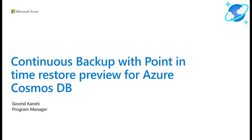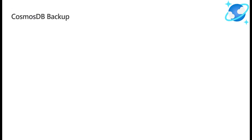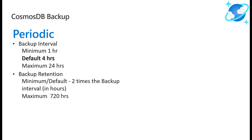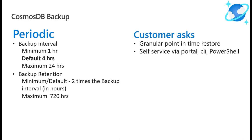Let us briefly review what is available for backup today and various customer asks. Cosmos DB takes backup of the account at a four hour interval and retains that backup for about eight hours. The first two copies are completely free. You can modify the backup retention and interval and pay extra for those copies. The restore activity is triggered via support ticket. Our customers have asked for self-service restore via portal, CLI or PowerShell and more granular restore.